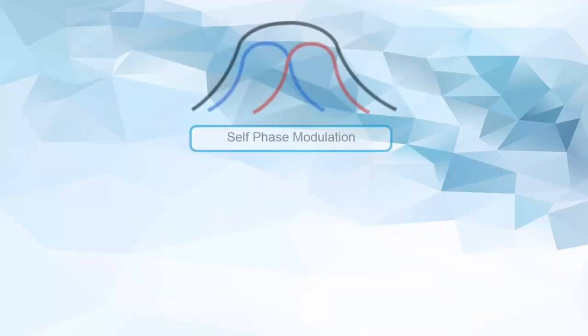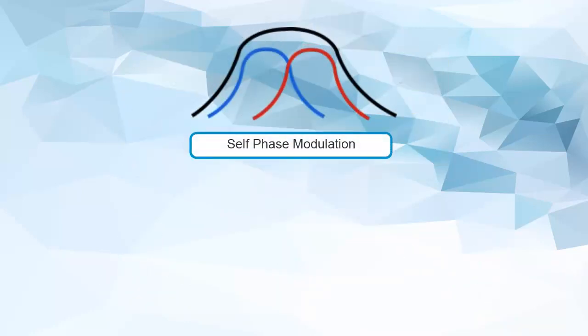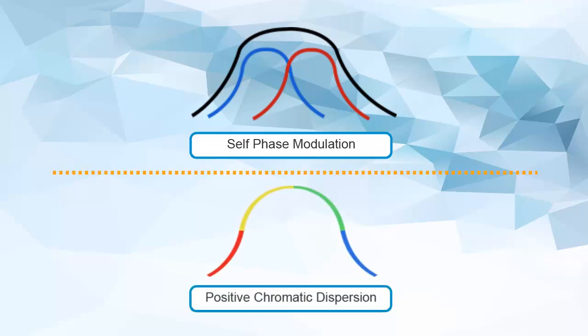The wavelength shifts that SPM causes are the exact opposite of positive chromatic dispersion. In advanced network designs, SPM can be used to partly compensate for the effects of chromatic dispersion.